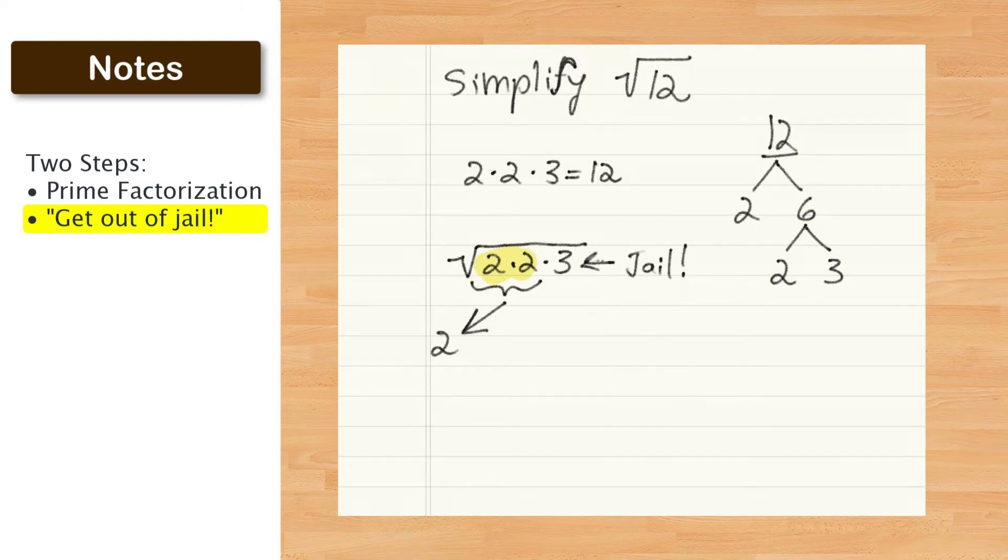Once a pair leaves jail, you just keep one of the twos on the outside. They combine forces in the outside world. Whatever. It's dumb. Make up your own little story. That's the best I got.